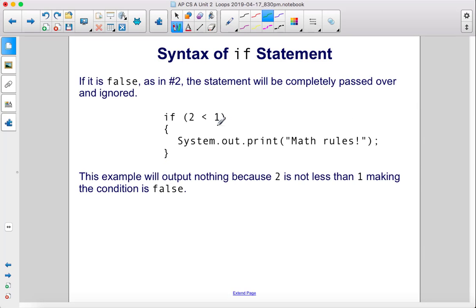If the condition is false, like it is in problem number 2, the statement will be completely passed over and ignored. This example will output nothing because 2 is not less than 1, making the condition false. So the computer sees this and then just jumps ahead, skipping the code inside of the curly braces altogether.